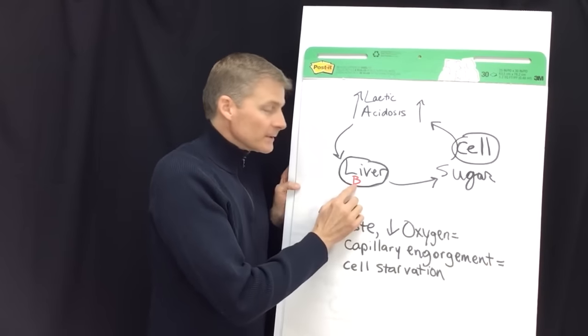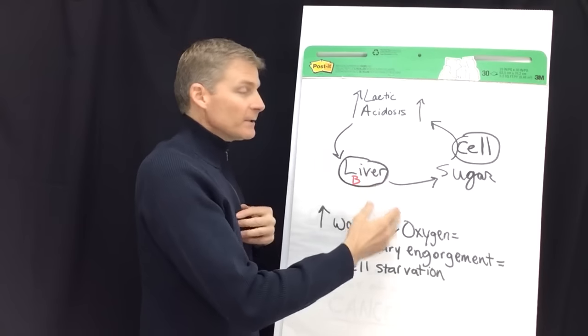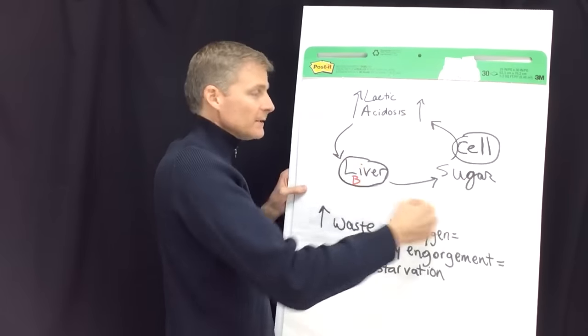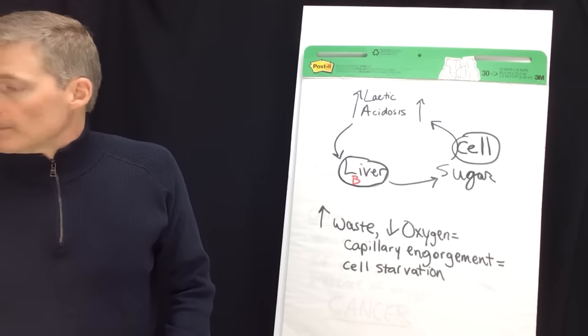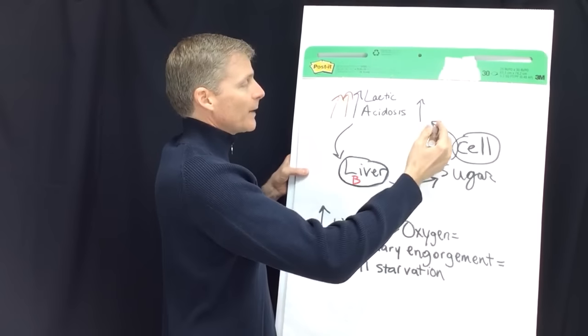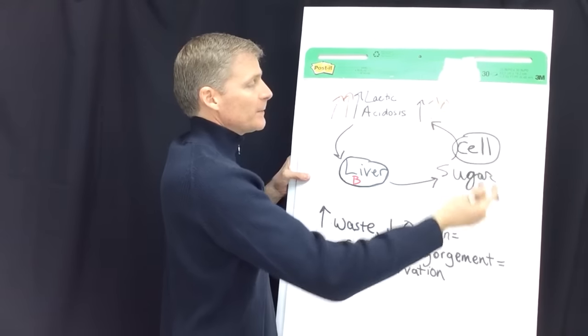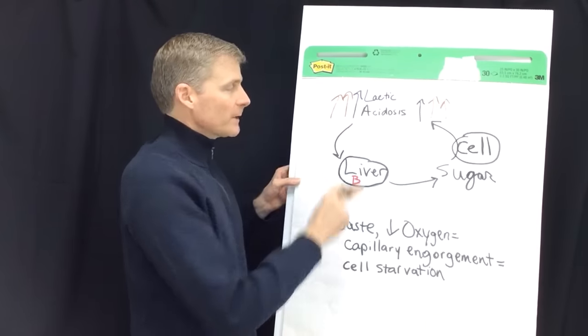Now I put a little B here and the B stands for the B vitamins that are required by the liver in order to facilitate this lactic acid cycle and keep it going. Because if it's not going at the rate that it should be going, you get a buildup of lactic acid byproducts based on if you have too much of this going on or not enough of this going on.